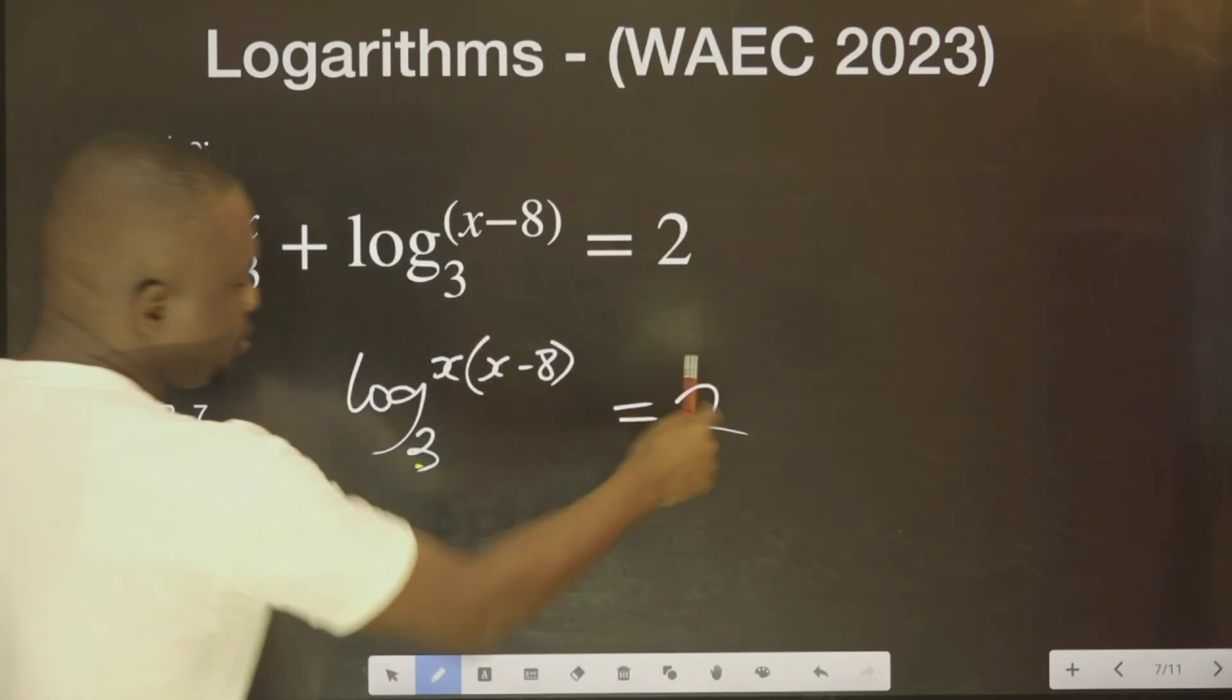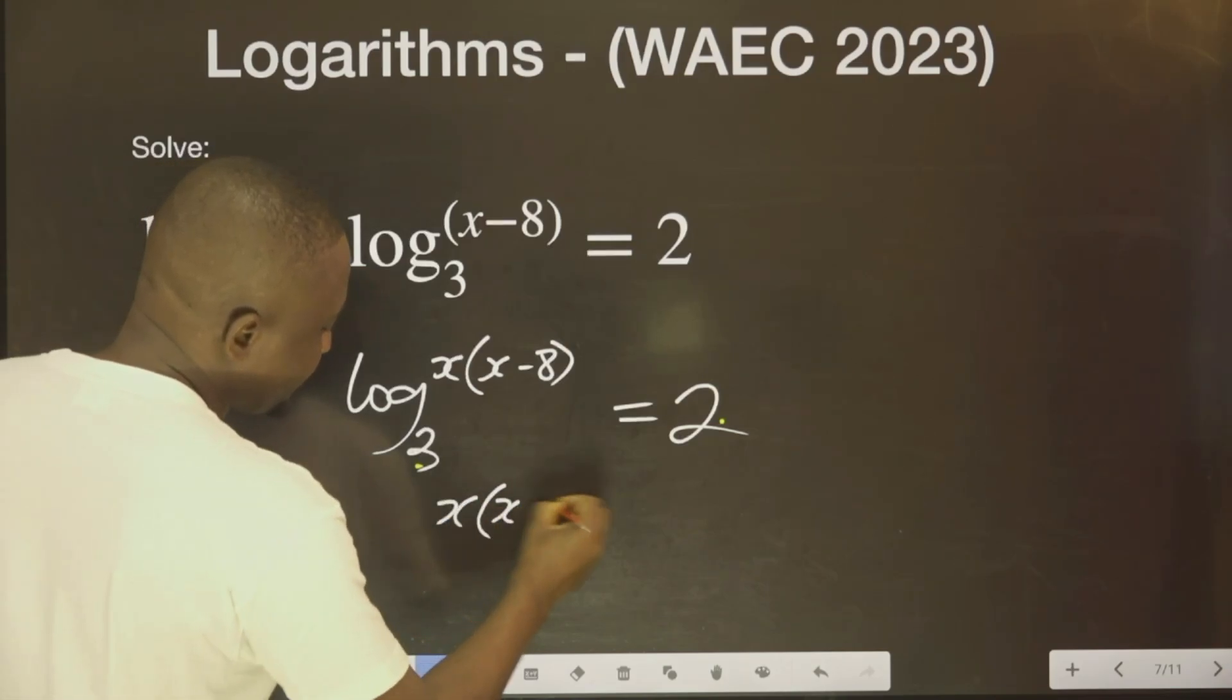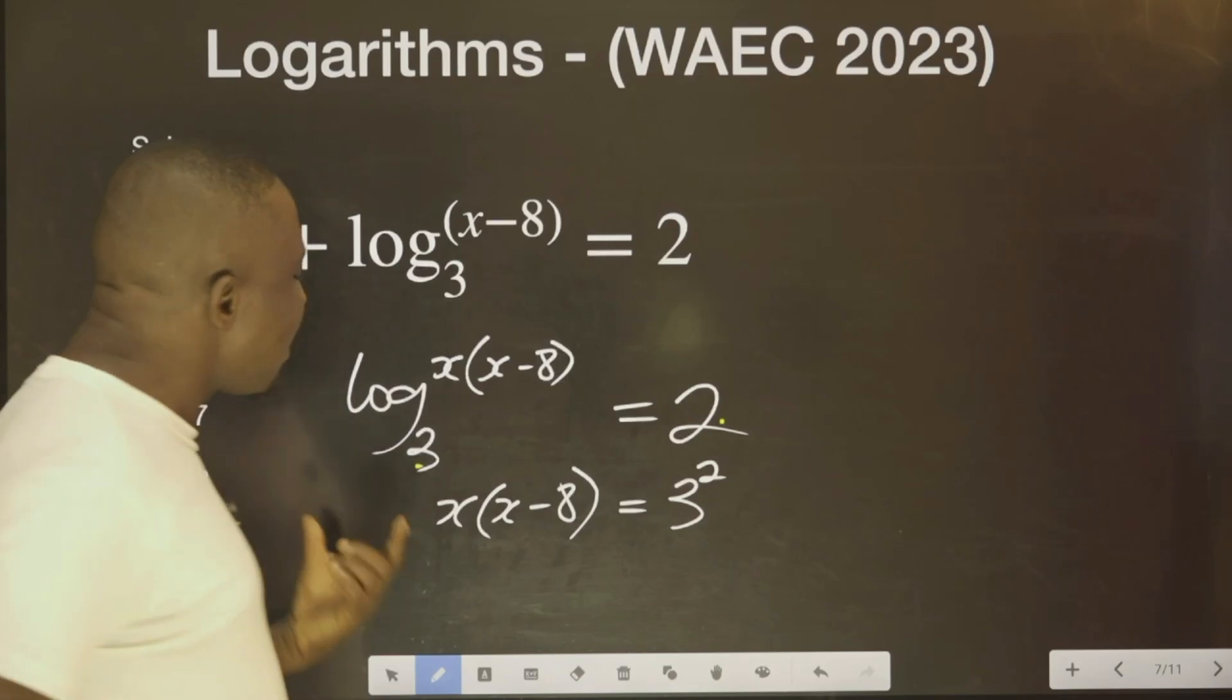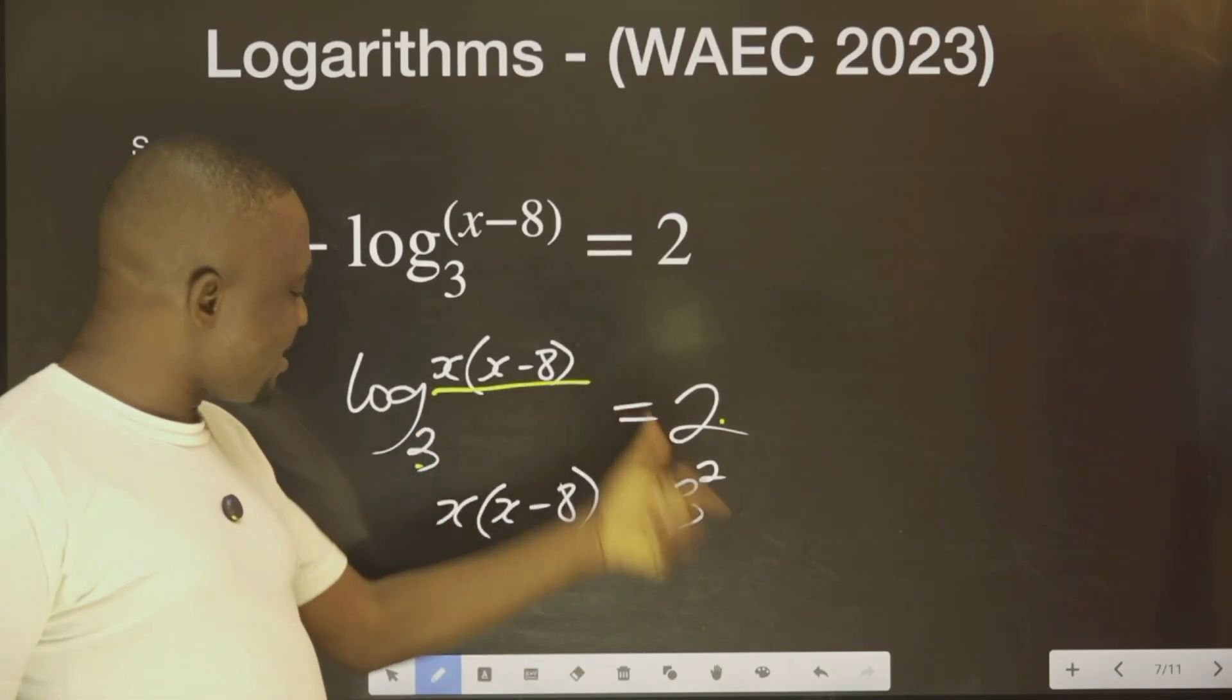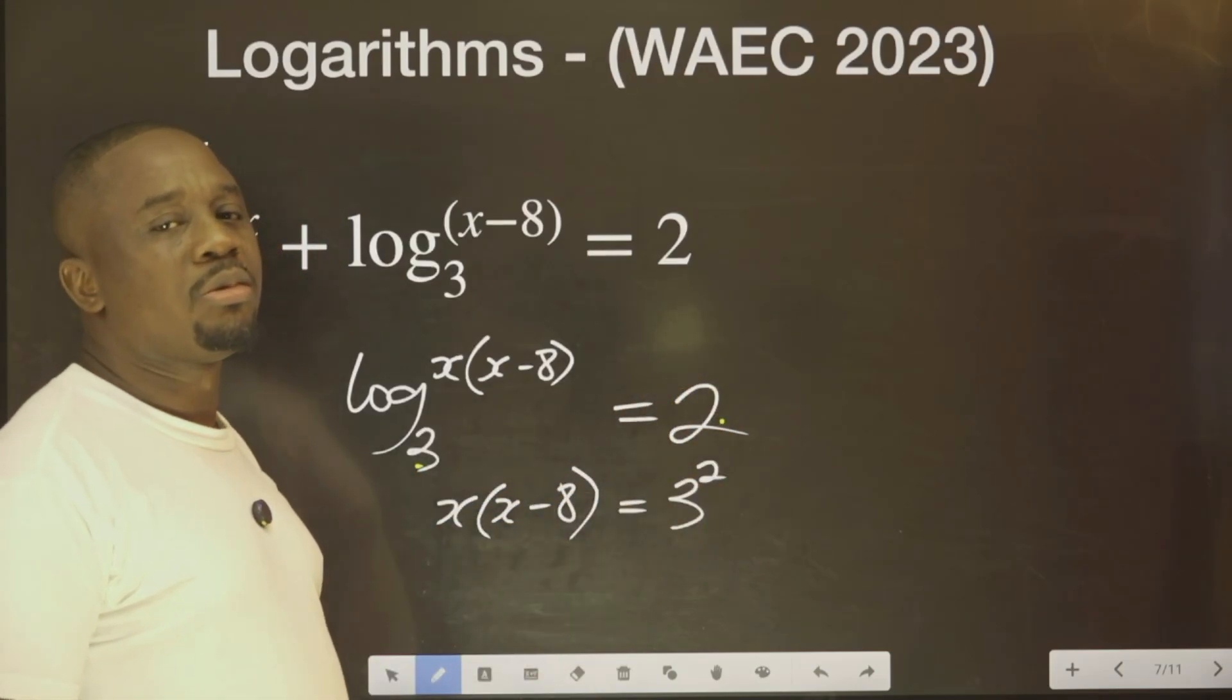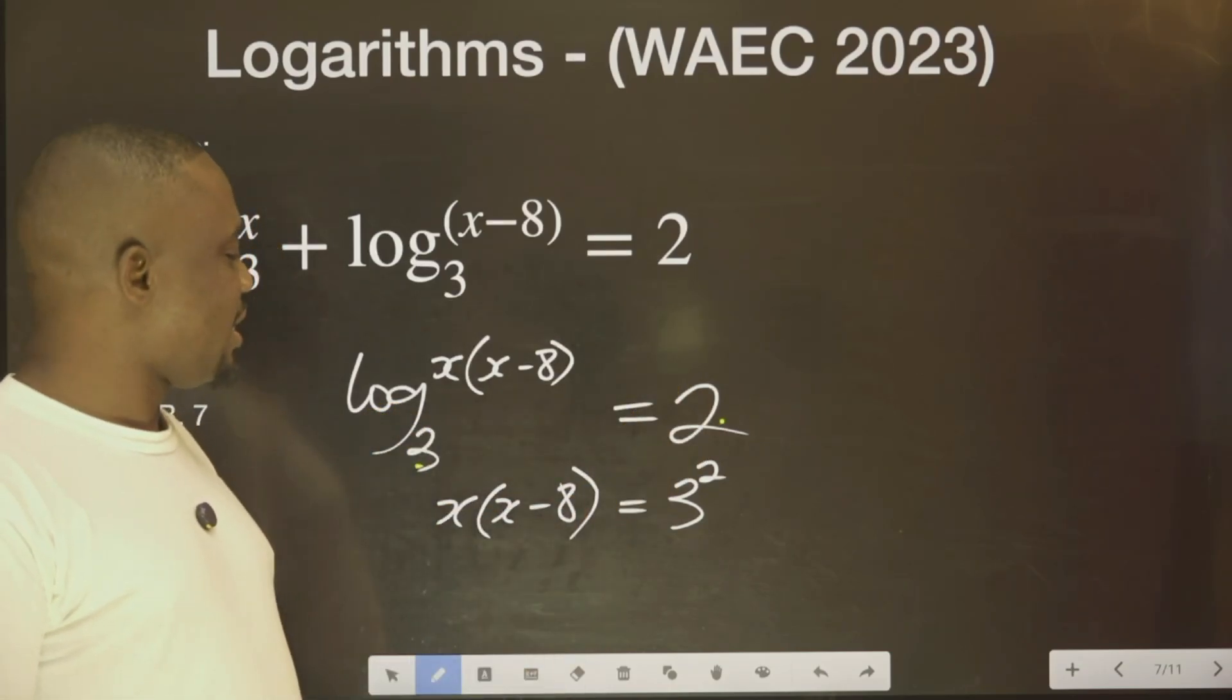Then we move this to indices form. That is, x times (x-8) equals 3 raised to the power 2. What it means is, the way I explain it is, 3 have been carrying these guys. So you need to go to the other side and also carry 2. So y is going to the other side to carry 2. This logarithm will not follow 3. That's what happens here.